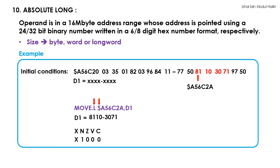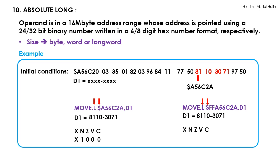Now let's do one more. Consider the instruction MOVE.L FFA56C2A, D1. The microprocessor will move the data from address A56C2A into D1 — the FF value is neglected. In fact, if FF is replaced with any two-digit hex number, it too will be neglected. Notice that FFA56C2A is a 32-bit binary number written as an 8-digit hex number. However, since the microprocessor recognizes the syntax as an absolute long addressing mode instruction, only A56C2A, which is a 24-bit binary address, is used as the address of the operand. The dot L after the mnemonic MOVE tells the microprocessor that a long word is to be moved. Thus, the long word data stored starting at address A56C2A is moved to D1. Since the data moved is 81103071, a negative signed number that is not 0, the status register is updated as X1000.